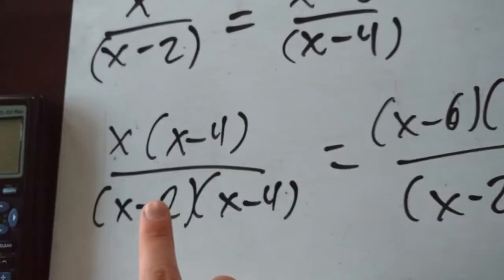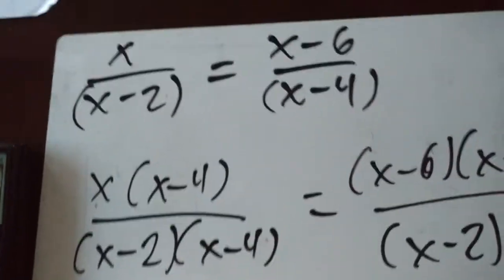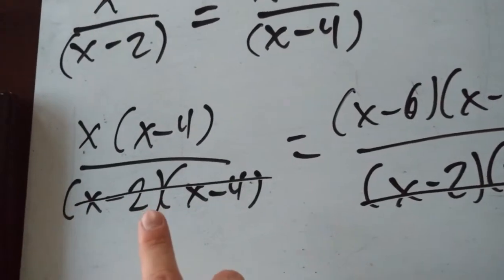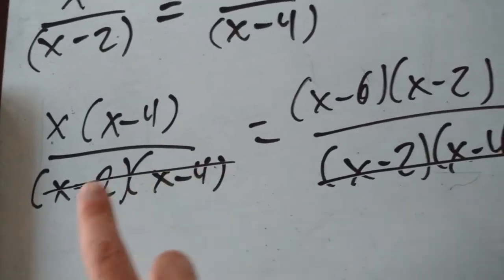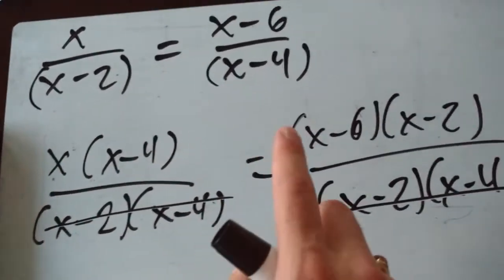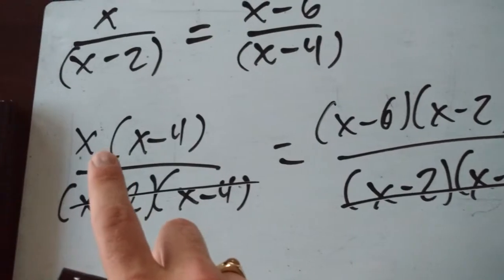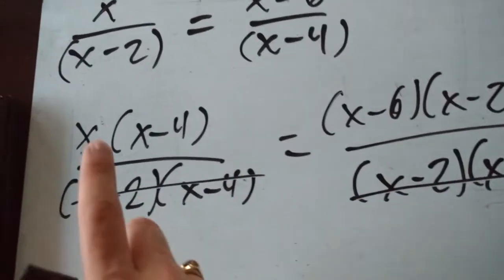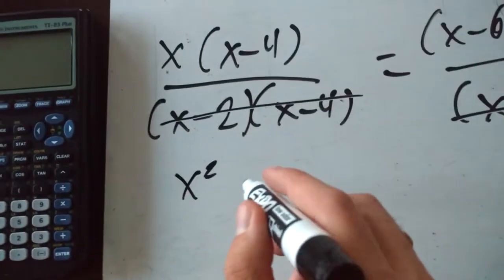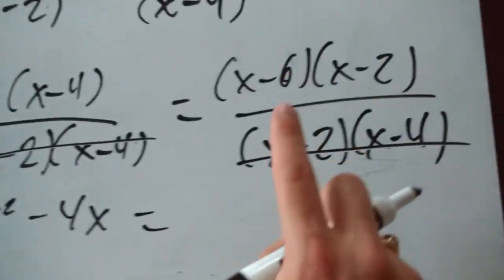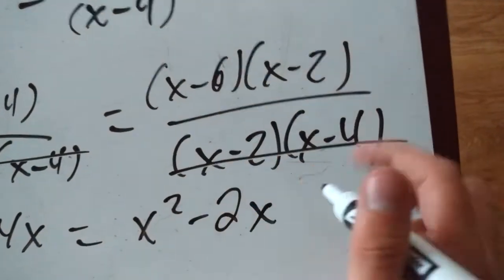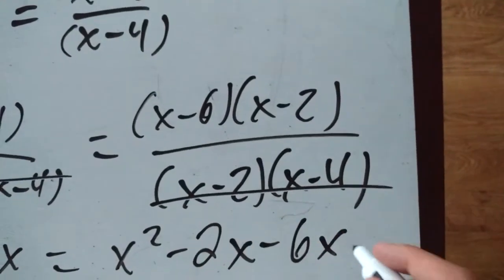Since this is an equation and we have the same denominator on both sides, we can now ignore the denominators — but we do want to remember what our non-permissible values are. On the top, we expand: x times (x minus 4) gives x squared minus 4x on the left. On the right, (x minus 6)(x minus 2) expands to x squared minus 2x minus 6x plus 12.